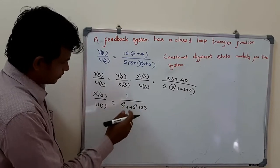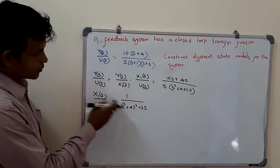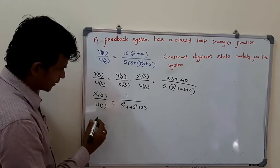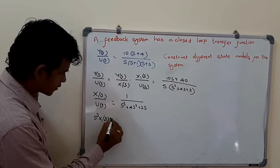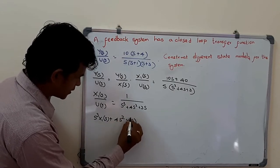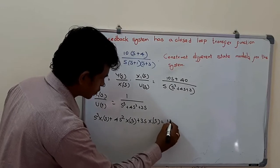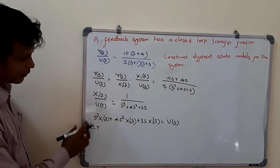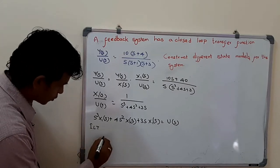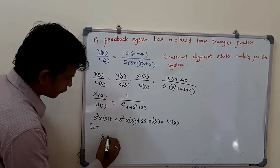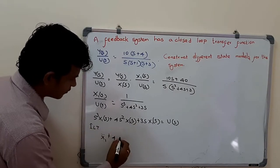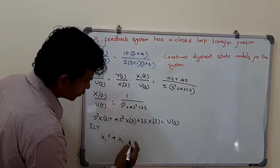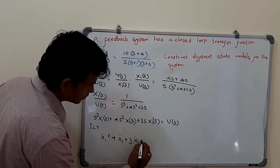Taking s cubed common outside and doing cross multiplication with x1(s) and U(s), I get: s cubed times x1(s) + 4 times s squared times x1(s) + 3 times s times x1(s) = U(s). Now performing inverse Laplace transform: x1 triple dot + 4 times x1 double dot + 3 times x1 dot = u.